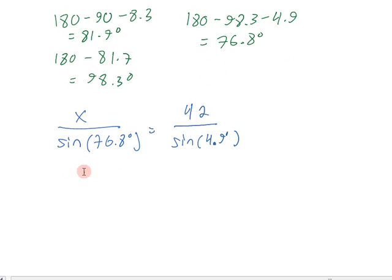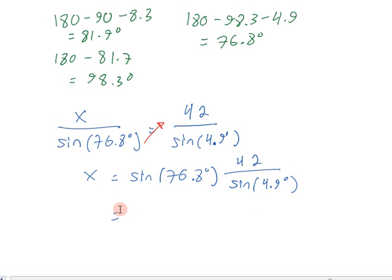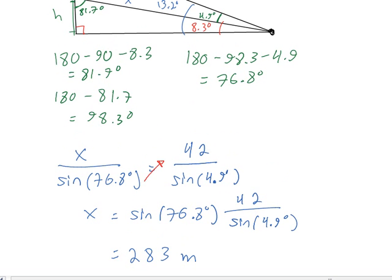To solve this for x, I'm going to multiply across by the sine of 78.6 degrees, and that'll give me the sine of 76.8 degrees times 42 over the sine of 4.9 degrees. Neither of these angles are major angles on the unit circle, so I'll turn to my calculator to solve this, and I'll find that x is 283 meters to 3 significant digits.